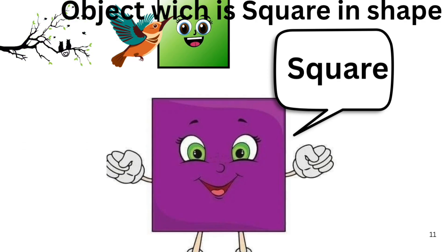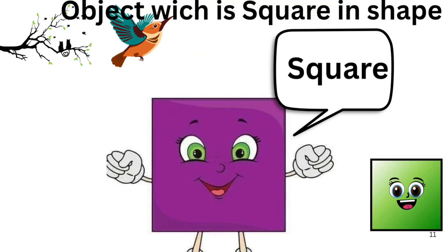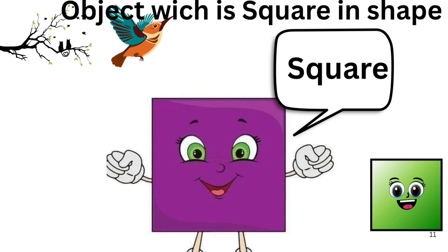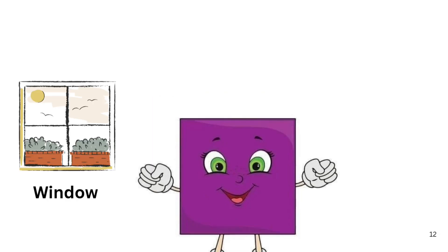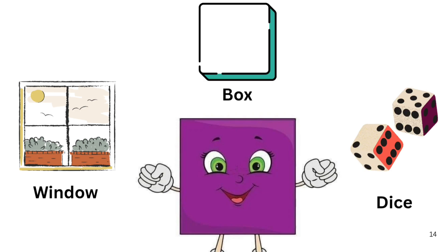Hello guys, I am square. Let's learn the objects which are square in shape. Window, box, dice — these are square in shape.